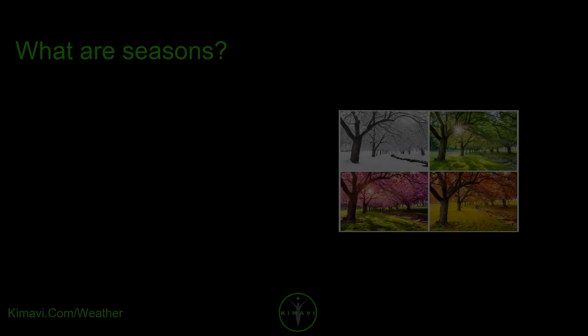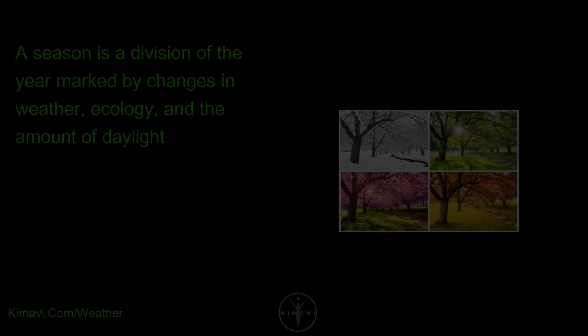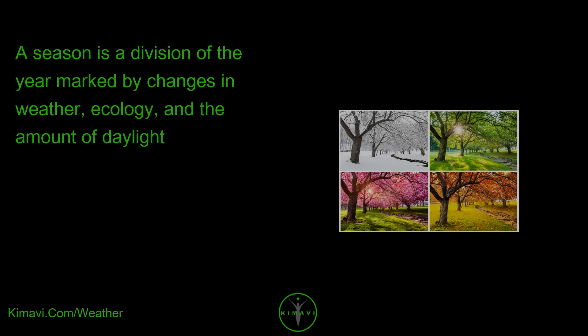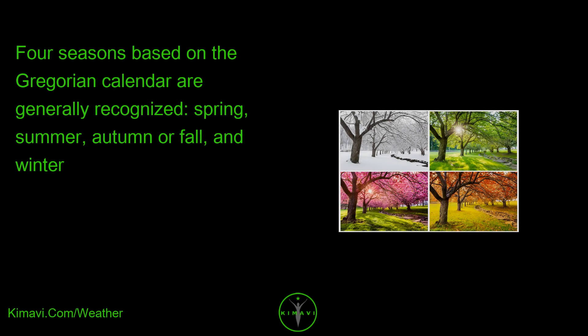What are seasons? A season is a division of the year marked by changes in weather, ecology, and the amount of daylight. Four seasons, based on the Gregorian calendar, are generally recognized: spring, summer, autumn or fall, and winter.